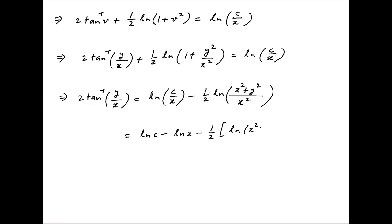Using properties of logarithms, the right hand side can be written as ln c minus ln x minus half of ln of, in brackets, x squared plus y squared minus ln of x squared. Now ln of x squared is equal to 2 times ln x, and this cancels with minus ln x outside the brackets.